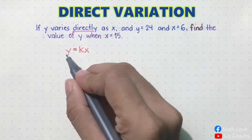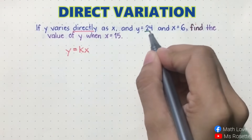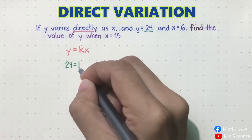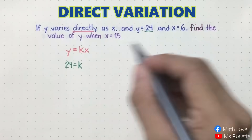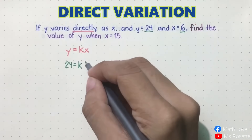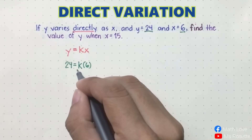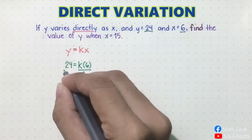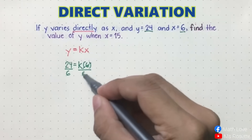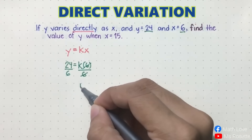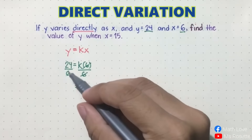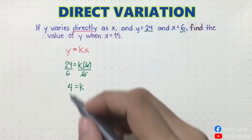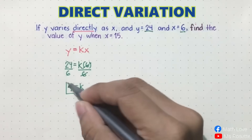So let us substitute. y will become 24, so we'll write 24 equals k times 6. Now solve for k by dividing both sides by 6. 24 divided by 6 is equal to 4. So the constant of variation is equal to 4.